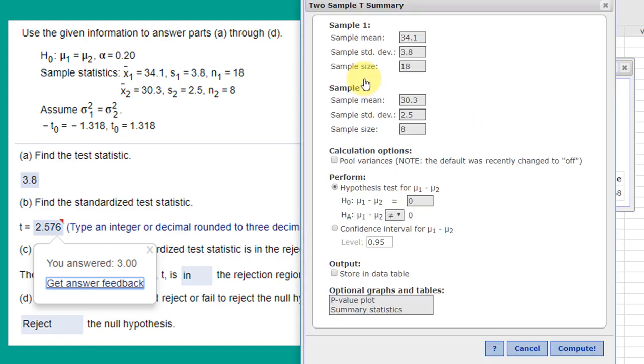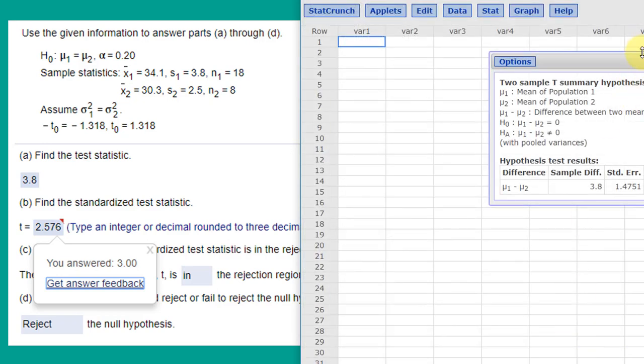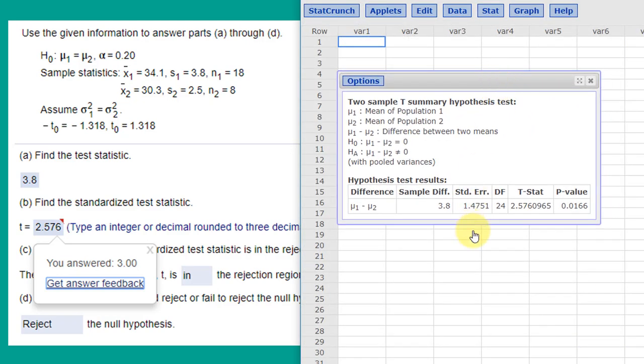Let's go back, edit. This time I want to check pool variances, and click compute, and we bring the information up there. You can see our t-stat 2.576 is correct. Our sample difference 3.8 is correct. And we've got a p-value of .0166, which is less than our alpha of .2. So that would tell you to reject the null.